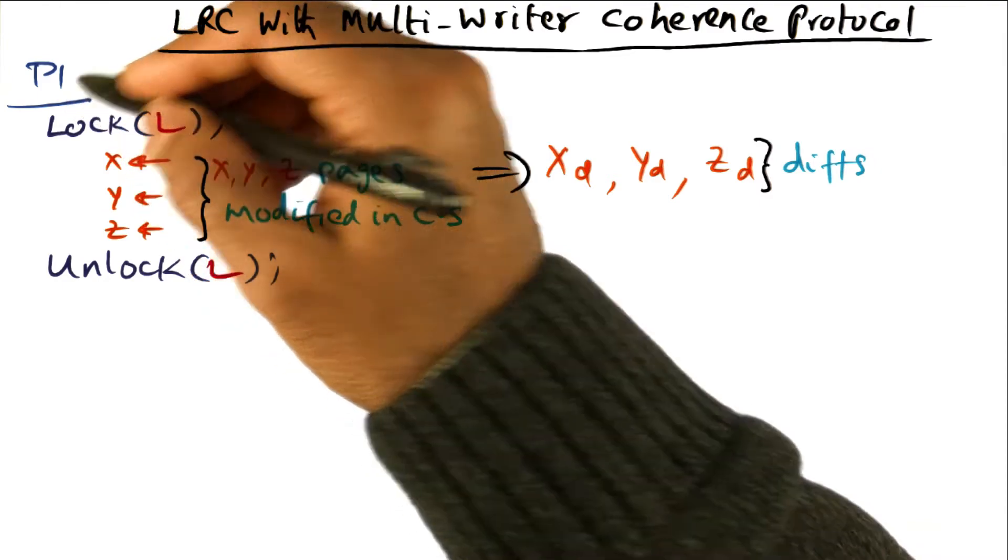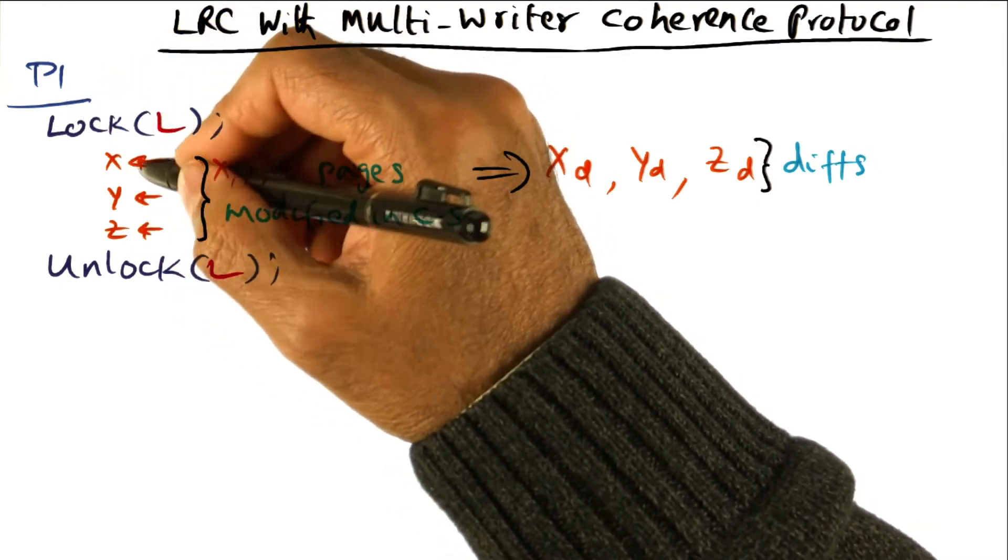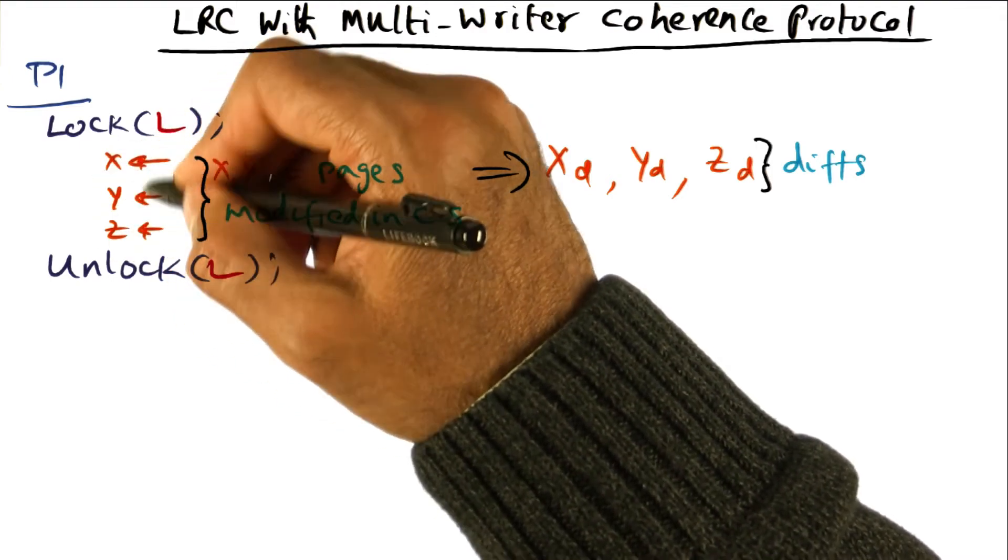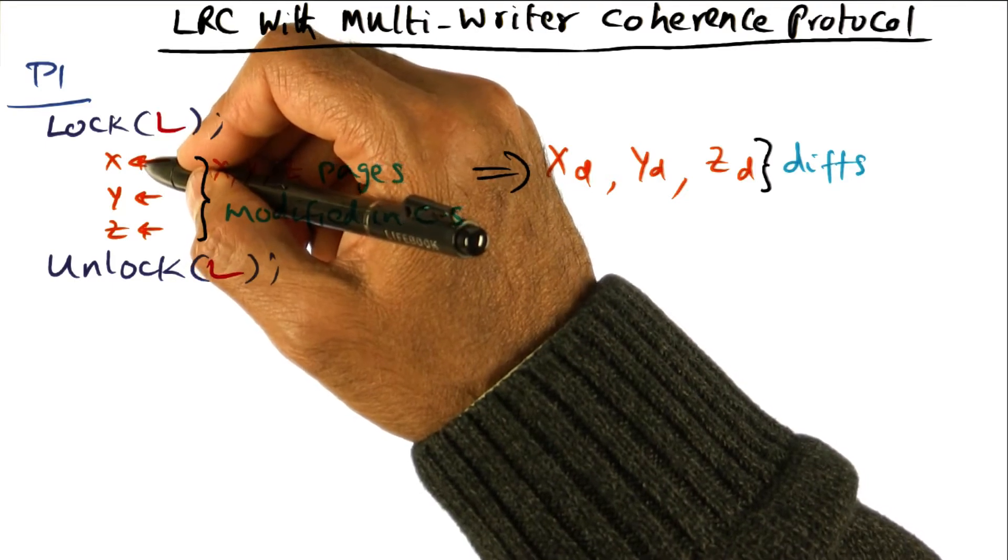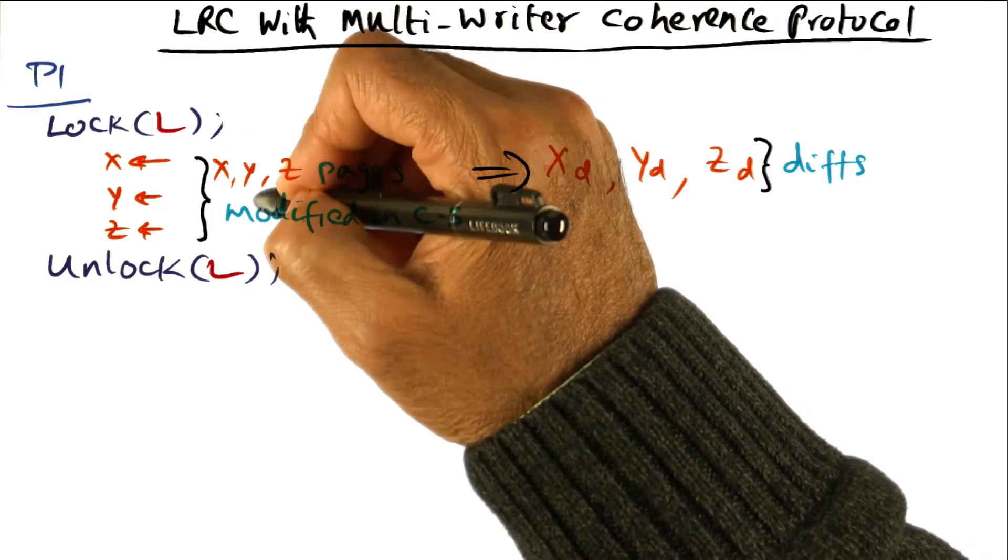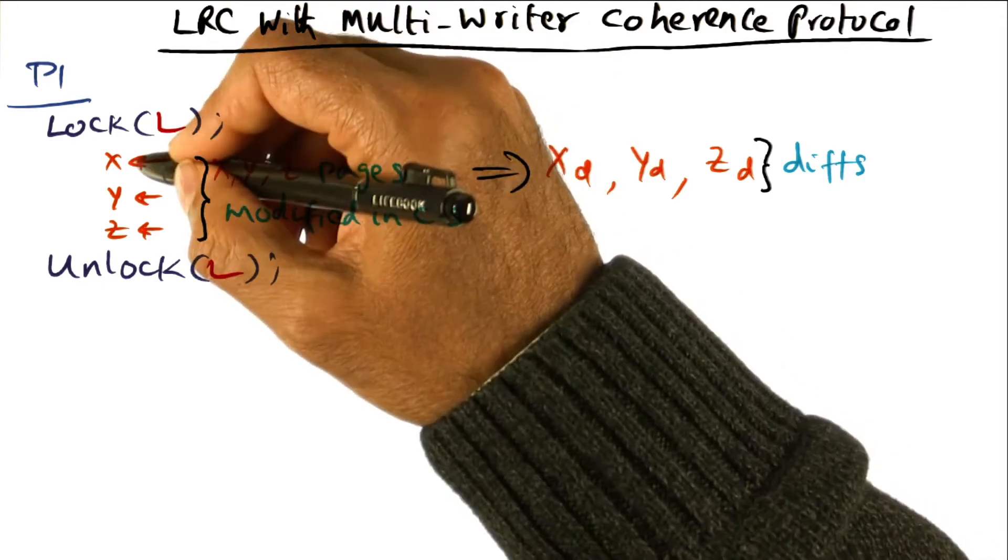A process P1 acquires a lock and makes modifications. This notation that I'm using is to indicate that these pages X, Y, and Z—actually, they are data structures that are being modified, but we are maintaining coherence at the level of pages. So we will say that the data structures that we're modifying within this critical section are contained in pages X, Y, and Z.